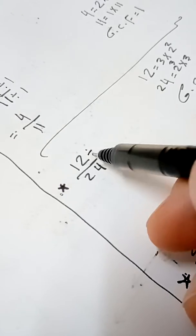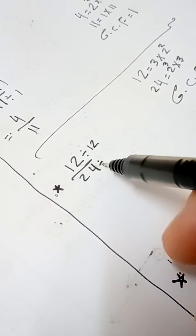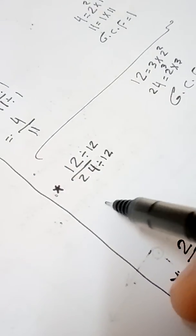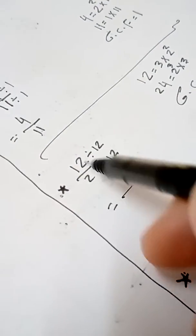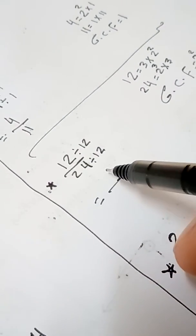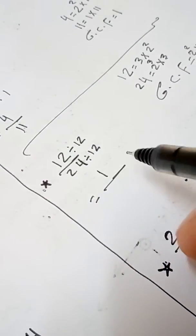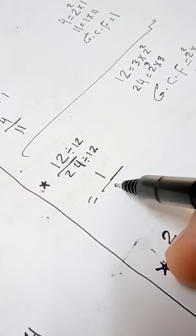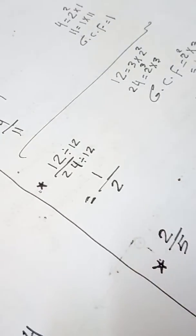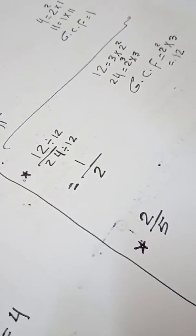Divide both by 12: 12 divided by 12 equals 1, and 24 divided by 12 equals 2. So the simplest form of 12 over 24 is 1 over 2.